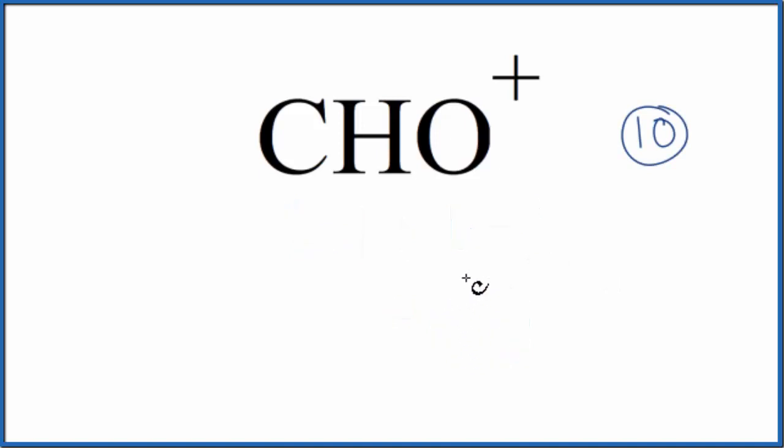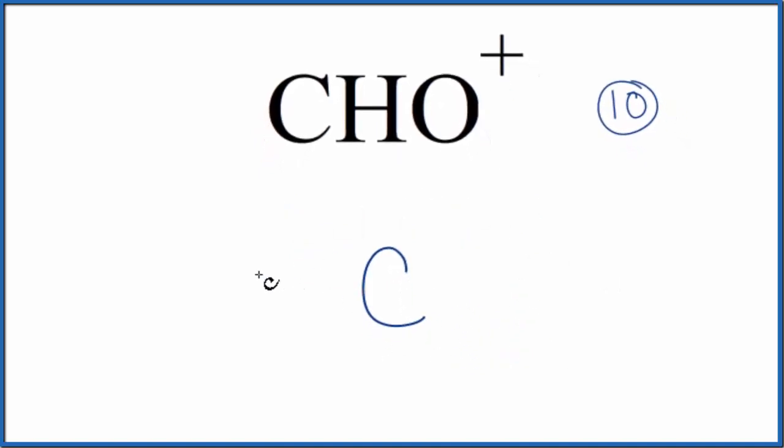We'll put the least electronegative element in the center. That's the carbon. The hydrogen always goes on the outside, so we'll put our hydrogen out here. Let's put our oxygen over here. So we can start, we have 10 total valence electrons, by putting pairs of electrons between atoms. That's going to form our chemical bond.